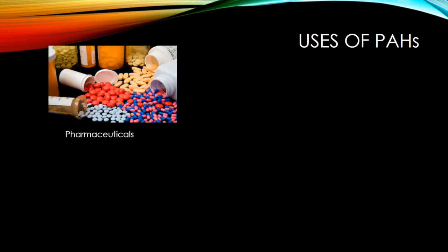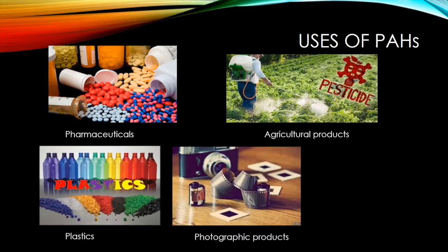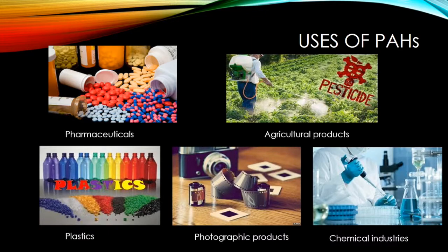PAHs are not synthesized chemically for industrial purposes. However, there are few commercial uses for many PAHs. They're mostly used as intermediaries in pharmaceuticals, agricultural products, thermosetting plastics, photographic products, and other chemical industries.